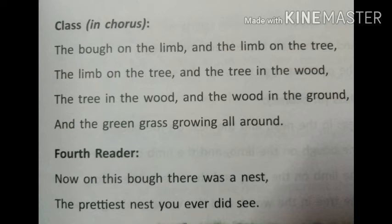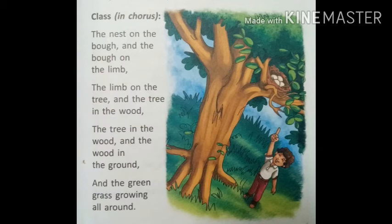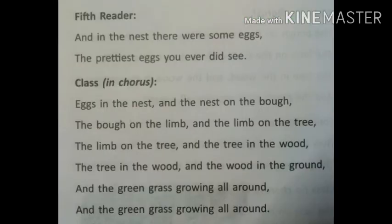Fourth reader: 'Now on this bough there was a nest, the prettiest nest you ever did see.' The fourth reader was saying that there was a nest on the branches of the tree that was also very beautiful. Class in chorus: 'The nest on the bough, and the bough on the limb, the limb on the tree and the tree in the wood, the tree in the wood and the wood in the ground, and the green grass growing all around.' The whole class described the tree with its trunk, many branches, a nest, and the green grass growing around it.